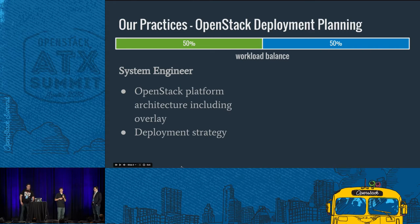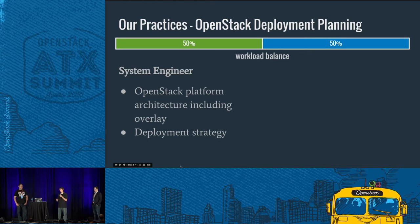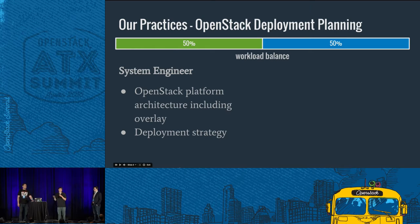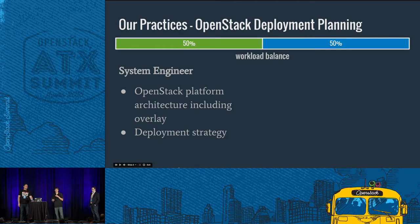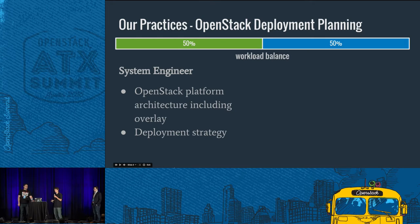We were also figuring out how we were going to deploy OpenStack — what type of configuration management tools we were going to use — and that included not only the OpenStack projects but also the network overlay, because again it's just running on a Linux platform. So you get all these cool tools like Puppet, Chef, and Ansible. It was critical that we understood how we were going to manage the network with those configuration tools as well.